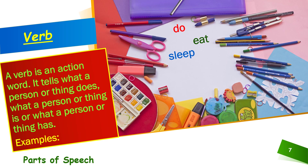They sleep at night — so the action here is 'sleep'. Run — we run in the park — so what work is being done there? Run. 'Run' is an action word. Similarly, you have many more examples like advise, ask, produce, etc. All these are verbs.